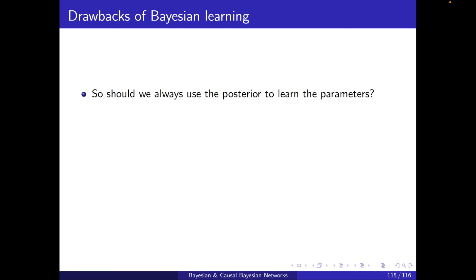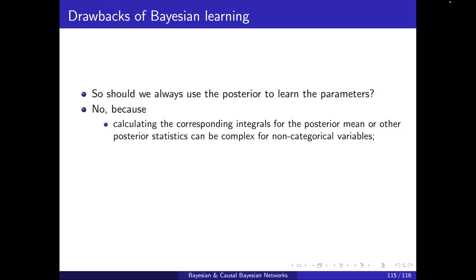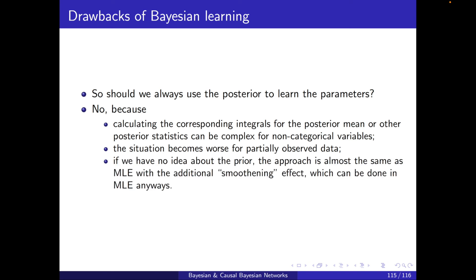Wrapping up: should we always use the posterior to learn parameters? No, because calculating the corresponding integrals of the posterior mean or other posterior statistics can be complex for non-categorical variables. The situation becomes worse with partially observed data and no prior knowledge. This approach is almost the same as MLE with just an additional smoothing effect — for example when using the posterior mean — which can be done in MLE anyway by adding imaginary counts. At the end of the day, it also depends whether you're a frequentist or a Bayesian.